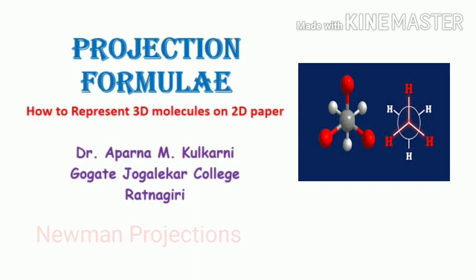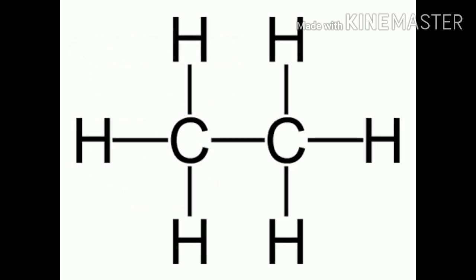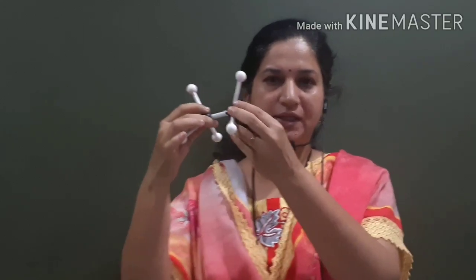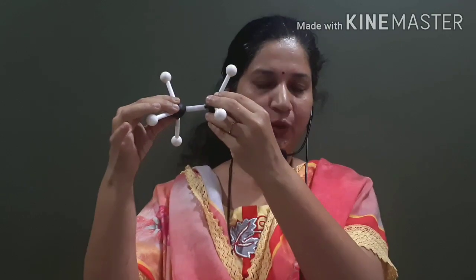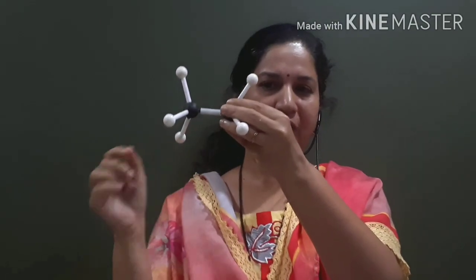We will see how to draw Newman projections of organic molecules. This is the structure of ethane, shown as a ball and stick model. Here you can see two black balls, which represent the two carbon atoms, joined by a carbon-carbon single bond. Each carbon is attached to three hydrogens.